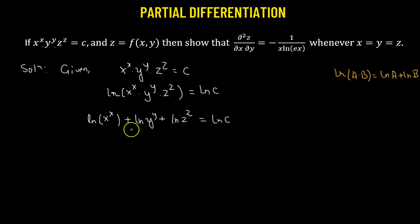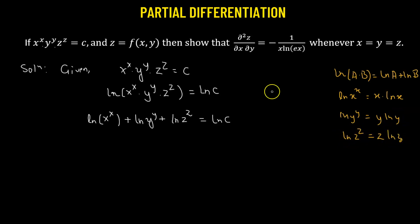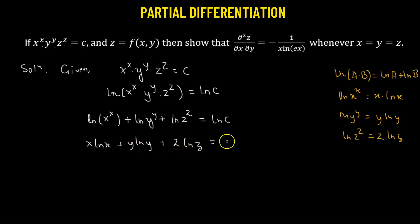We simplify each logarithm using the property log(x^x) = x·log(x). Similarly, log(y^y) = y·log(y) and log(z^z) = z·log(z). This gives us x·ln(x) + y·ln(y) + z·ln(z) = log(c). We label this as equation number one.